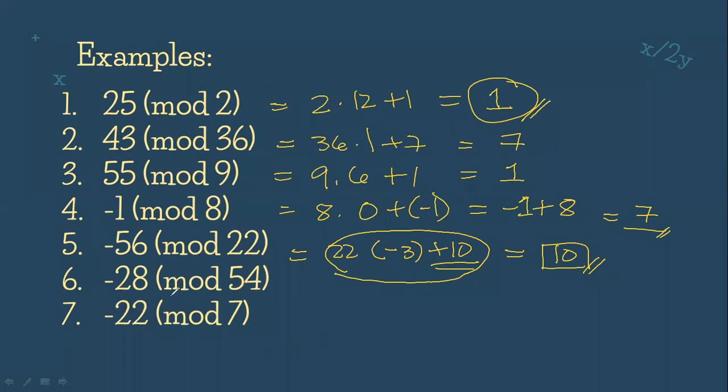Now let's have number 6. Negative 28 mod 54, it's the same as number 4. So we have 54 times 0 plus negative 28. But since there's no negative remainder, we wrap it up. That gives us negative 28 plus 54, which gives us 26. So negative 28 mod 54 equals 26.